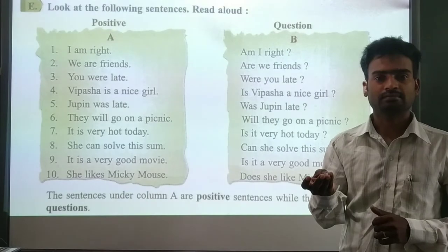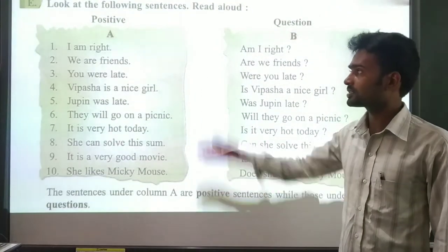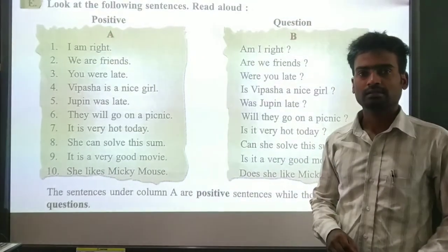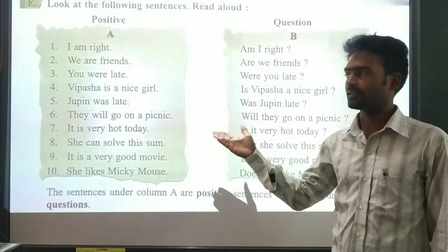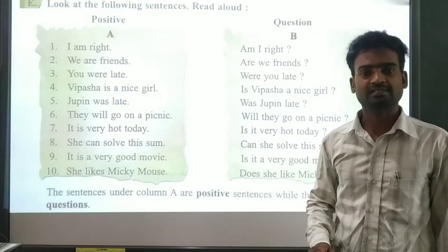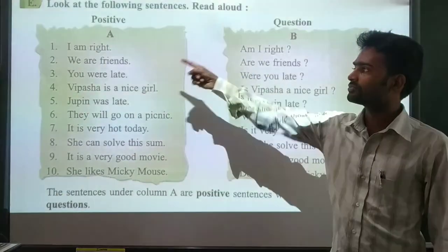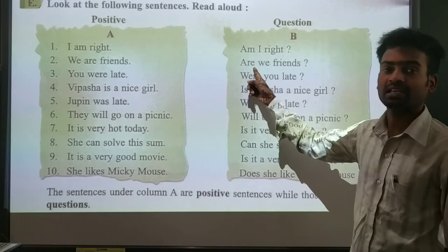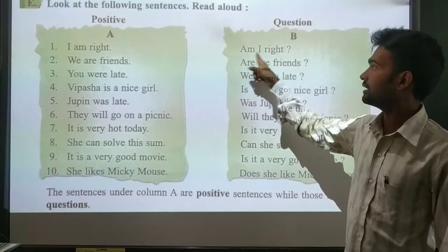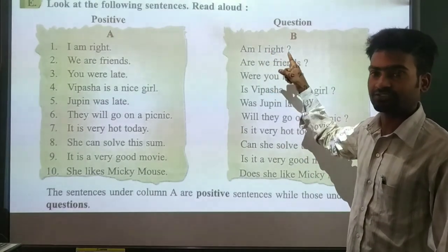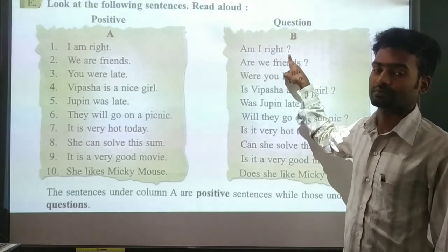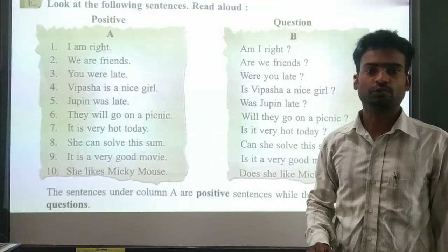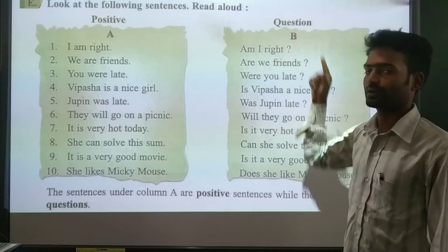The auxiliary verbs like 'am', 'or', 'where', 'is', 'was', 'can' - we have to bring them to the beginning of the sentence. If you do that, it becomes a question. 'I am right' - we bring 'am' to the beginning: 'Am I right?' Remember, we have to add a question mark at the end. 'Am I right?' - that's a question sentence.